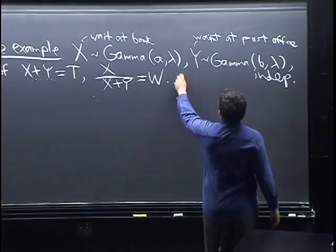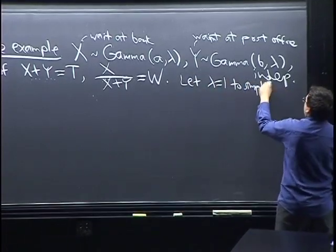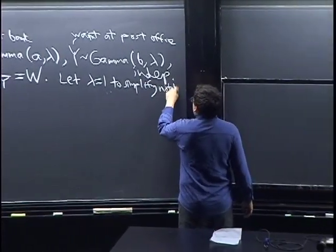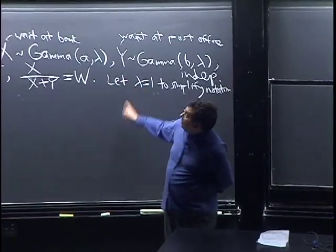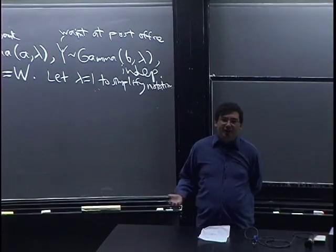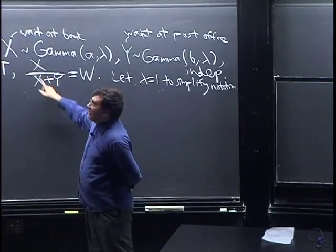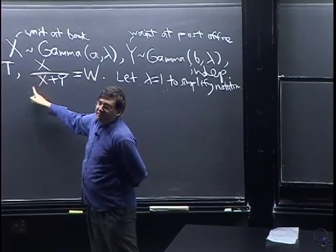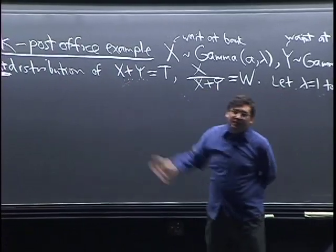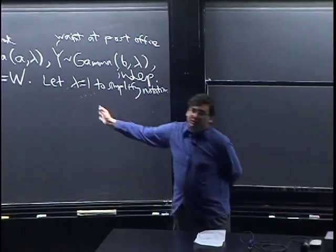Let's set λ = 1 to simplify notation — it's not any harder with general λ, just more notation. For the general case, we know you can go from Gamma(A,1) to Gamma(A,λ) by dividing by λ. It won't affect W since everything scales by the same factor and cancels, while T becomes Gamma(A+B, λ) instead of Gamma(A+B, 1). So this doesn't lose any generality.